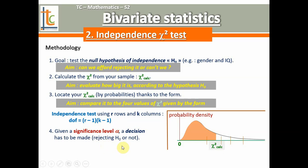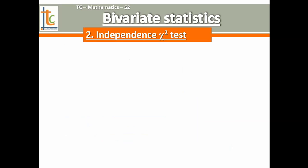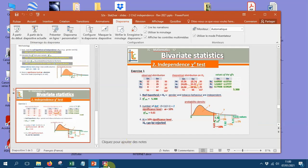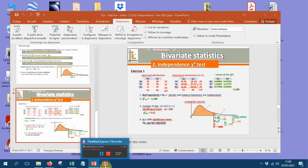In the next video, we will see examples and exercises on that — we will begin with exercise 1 of our document. We will be able to conclude any independence chi-square testing, and you will see that the formatting of the test is always the same — it's unique. Bye and thanks for having followed this video.